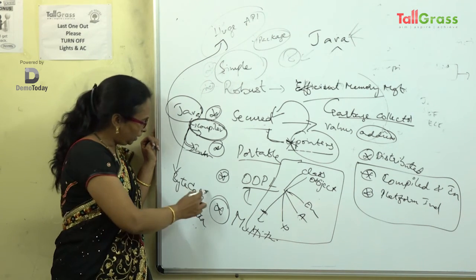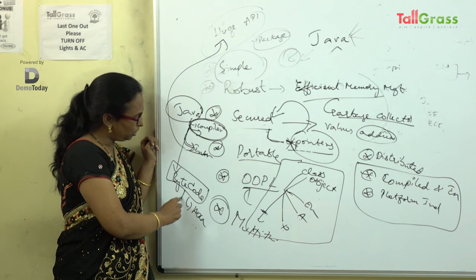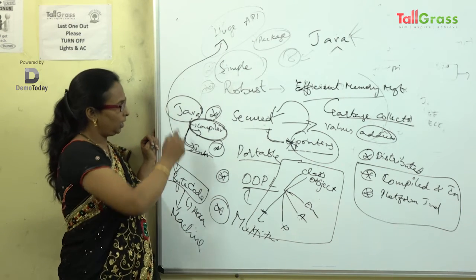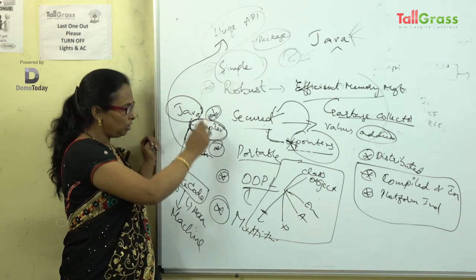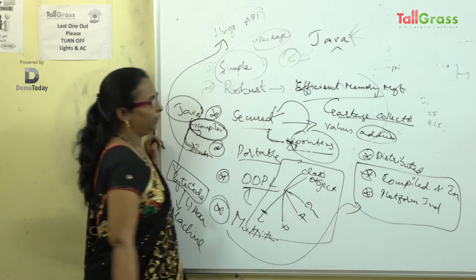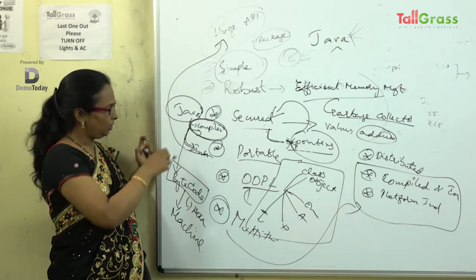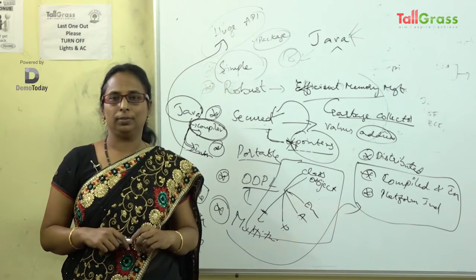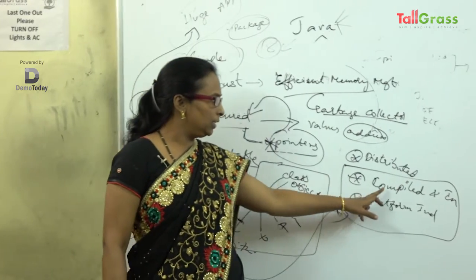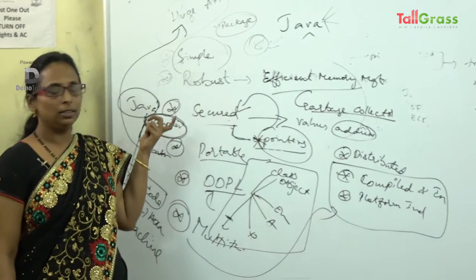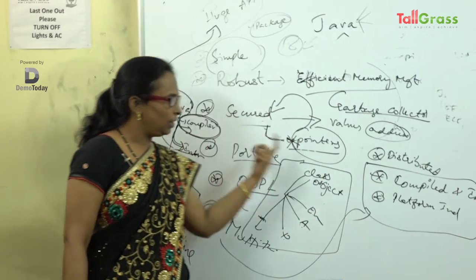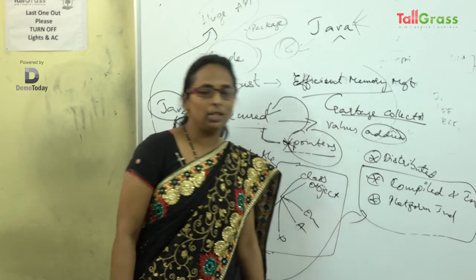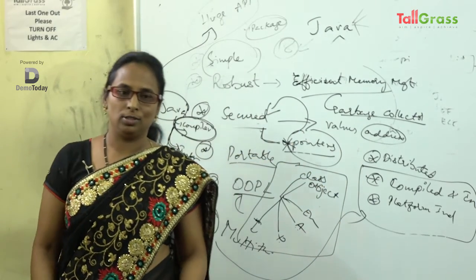This is why Java is platform independent. If you observe, the compiler and interpreter are not in the OS — they are maintained in the software itself. Because both compiler and interpreter are maintained within the Java software, Java is platform independent. That is why all of you — even from mechanical, ECE, and EEE backgrounds — are learning Java.